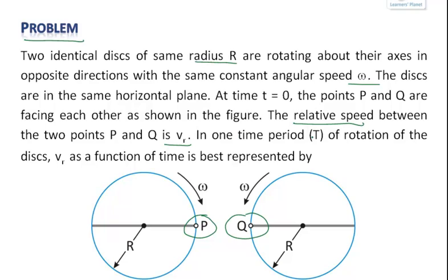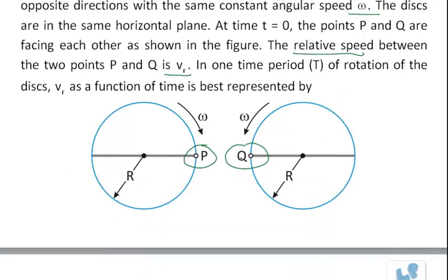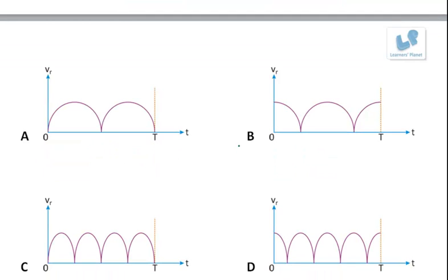In one time period T of rotation of the disk, vr as a function of time is best represented by - we are given four curves. We have to find out the relationship between the relative speed and time t.